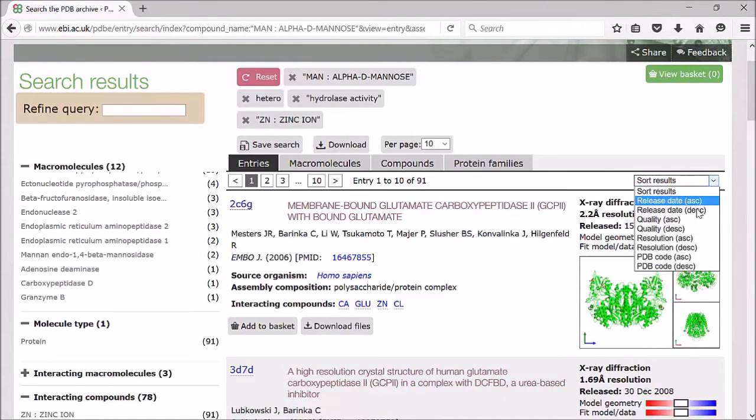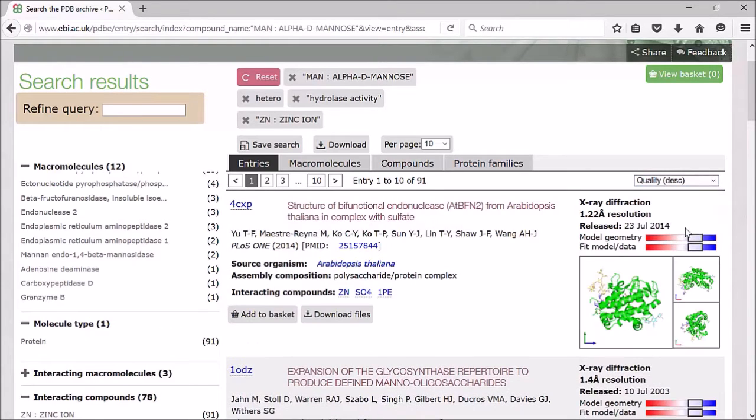You can also sort your results, for instance by quality, and this will give at the top of the page the best validation score, that is, the ones with the least outliers.